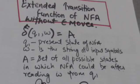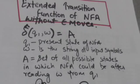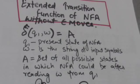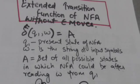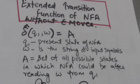Hello friends, welcome back. In this tutorial we will study about the extended transition function of NFA without empty moves. The normal transition function gives the transition of finite automata for a single input symbol, whereas the extended transition function gives the transition of finite automata for a string of input symbols in case of NFA without empty moves.